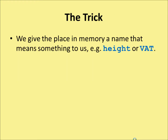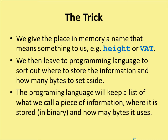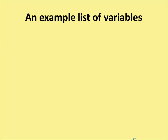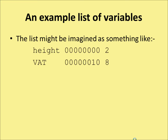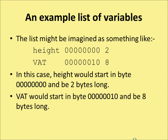We give the place in memory a name that means something to us — for example, height or VAT. We then leave it to the programming language to sort out where to store the information and how many bytes to set aside. The programming language will keep a list of what we call a piece of information, where it's stored, and how many bytes it uses. So a list like this might look like: height starts at 00000000 and is two bytes long; VAT starts at byte 00000010 and is eight bytes long.